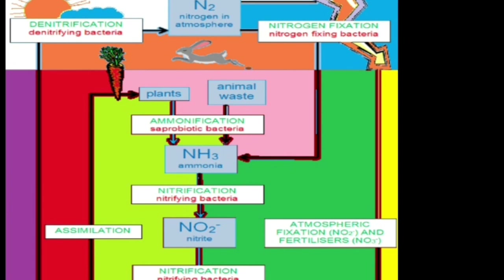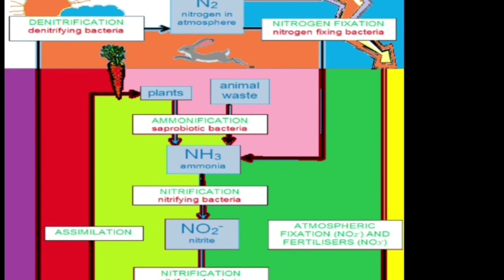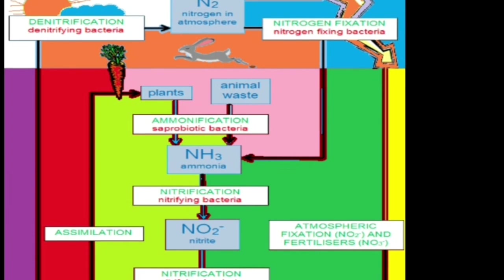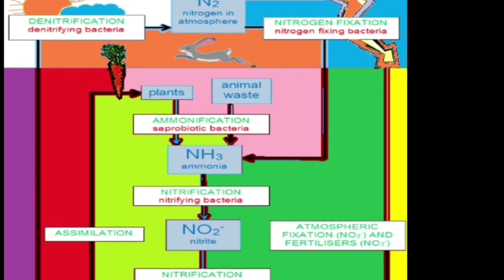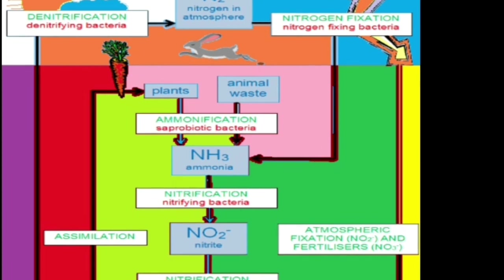Ammonia is toxic, so additional bacteria combine this ammonia with oxygen in a process called nitrification. At this point, the nitrogen is in a form called nitrite. Additional nitrifying bacteria then converts this nitrite to nitrate. At this point, plants can absorb this nitrogen in a process called assimilation. However, not all the nitrate is absorbed — some of it goes to bacteria that release the nitrogen back to the atmosphere in a process called denitrification.